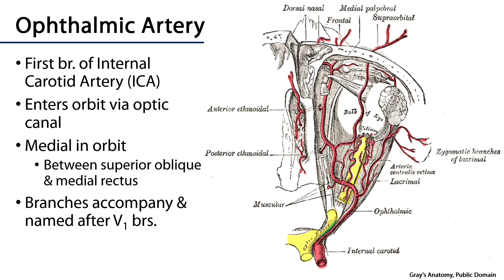Once it enters into the orbit it takes a medial path, so it typically crosses superiorly over the optic nerve, but it may also cross inferiorly. The main thrust of this vessel in the orbit is going to be found between the bellies of the superior oblique muscle, which has been cut away here, and the medial rectus muscle.